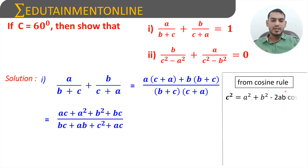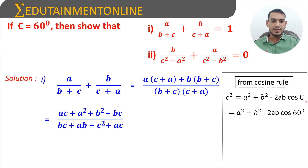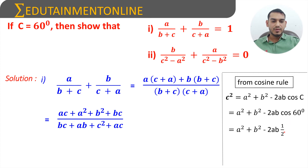From the cosine rule, c² = a² + b² - 2ab·cos C. Since angle C is given as 60 degrees, substituting: c² = a² + b² - 2ab·cos 60°. Since cos 60° = 1/2, we cancel the 2, giving c² = a² + b² - ab.